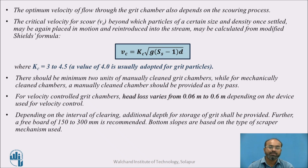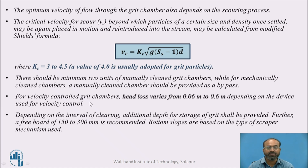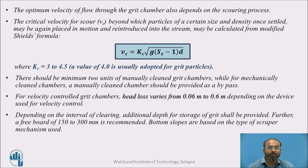For velocity-controlled grit chambers, the head loss generally varies between 0.06 metres to 0.6 metres depending on the device used for velocity control. Depending on the interval of clearing, additional depth for storage of grit shall also be provided. Further, an additional freeboard between 150 to 300 mm is recommended. Bottom slopes are based on the type of scraper provided for a typical grit chamber.